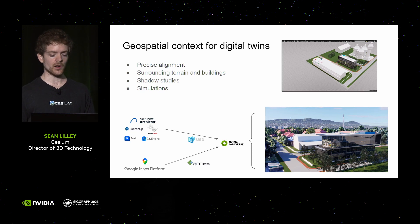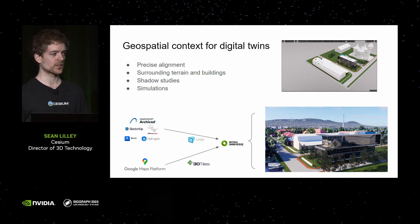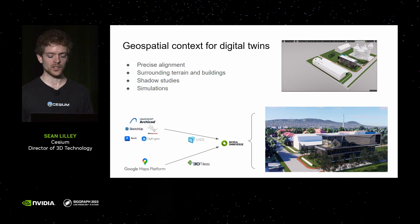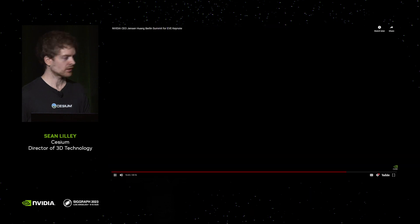Here we have a diagram of what this looks like. We have all these DCC tools being exported as USD, and then the Google Maps Platform 3D Tiles API coming in as 3D Tiles. Both the USD and 3D Tiles are coming together into Omniverse to create different layers that produce this result. The whole point is that you can see where it actually is in space, run simulations, and then go back and edit the design model. I'll be showing two videos of projects we've worked on in collaboration with NVIDIA to show larger scale digital twin projects.